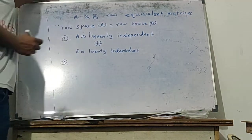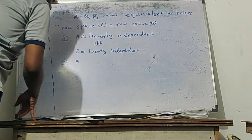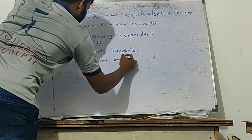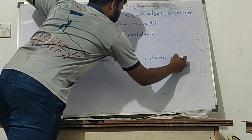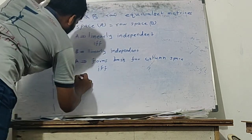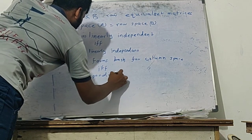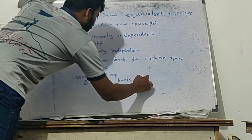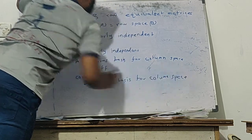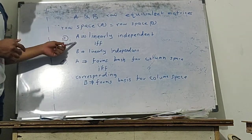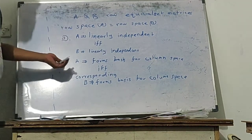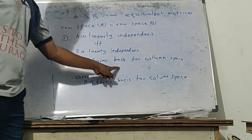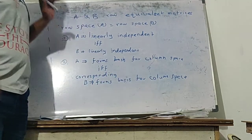The second statement is: the set of column vectors of A forms a basis for the column space if and only if the corresponding column vectors of B form a basis for the same column space. So if we have five column vectors and three of them form the basis for the column space of A, then the corresponding three form the basis for the column space of matrix B.